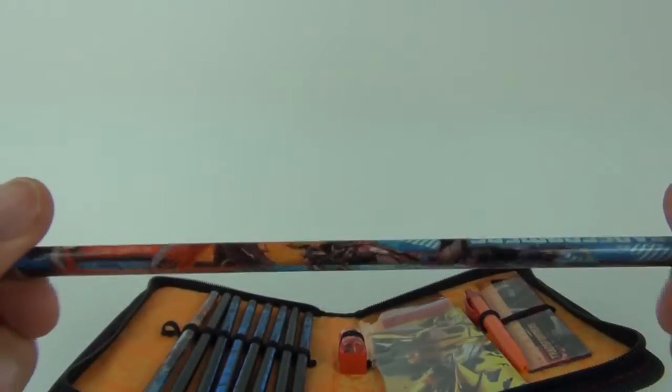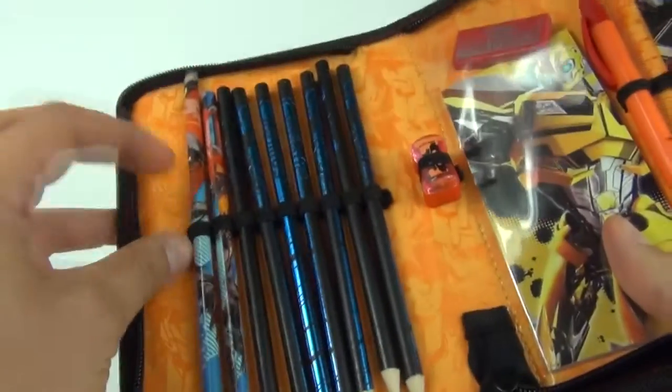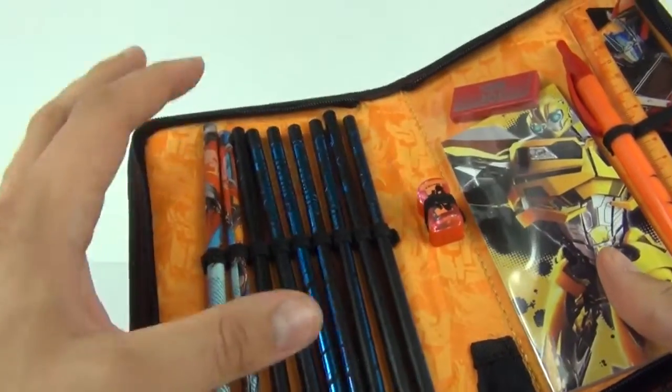You do get two pencils. Let's take a look at the pencil there. You can see we do have some nice pictures. You do get two of those pencils, and we do have these elasticated pieces inside so you can then put your stationery back in its place.